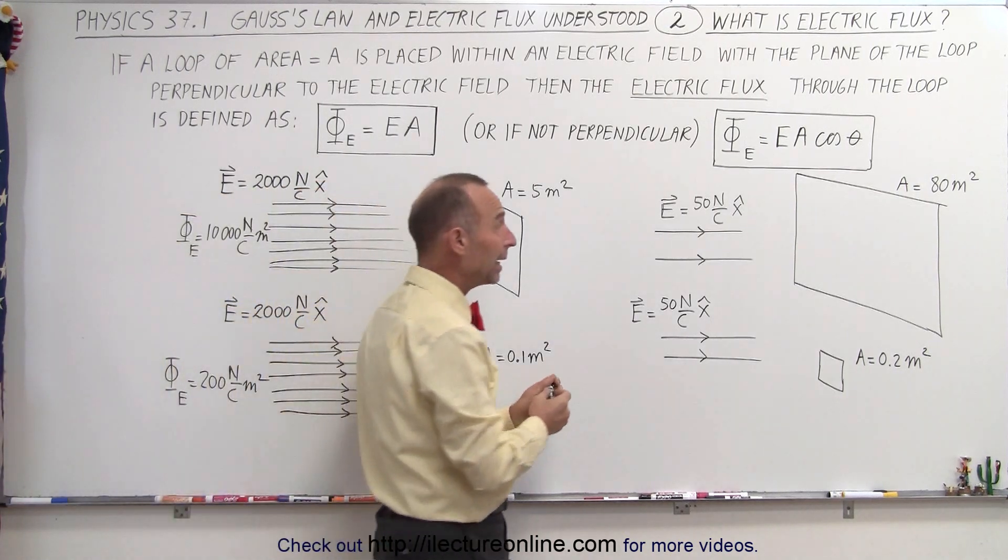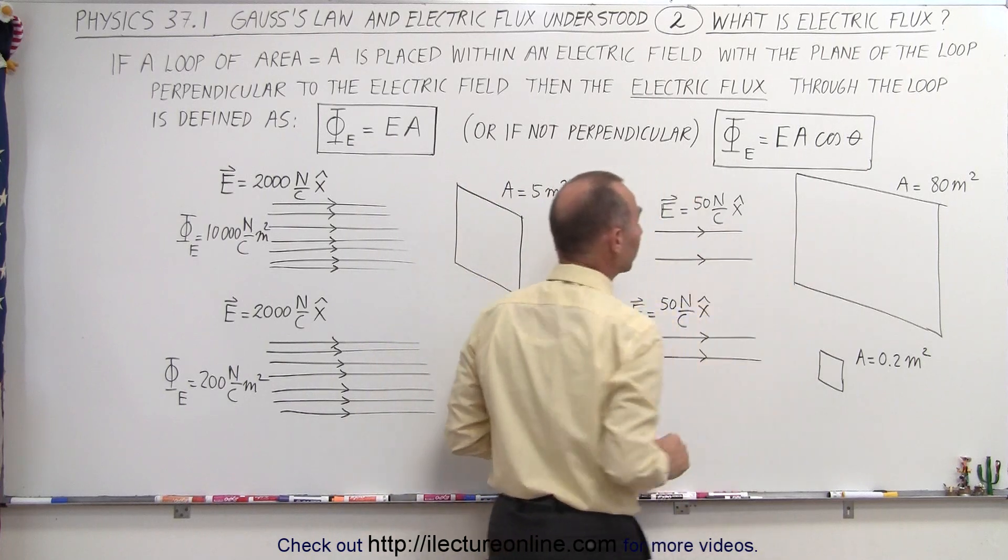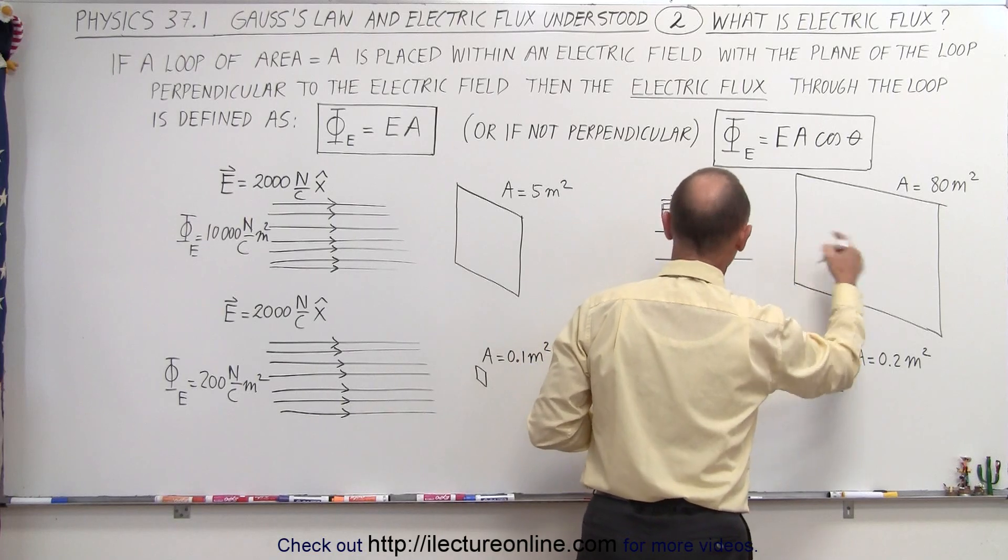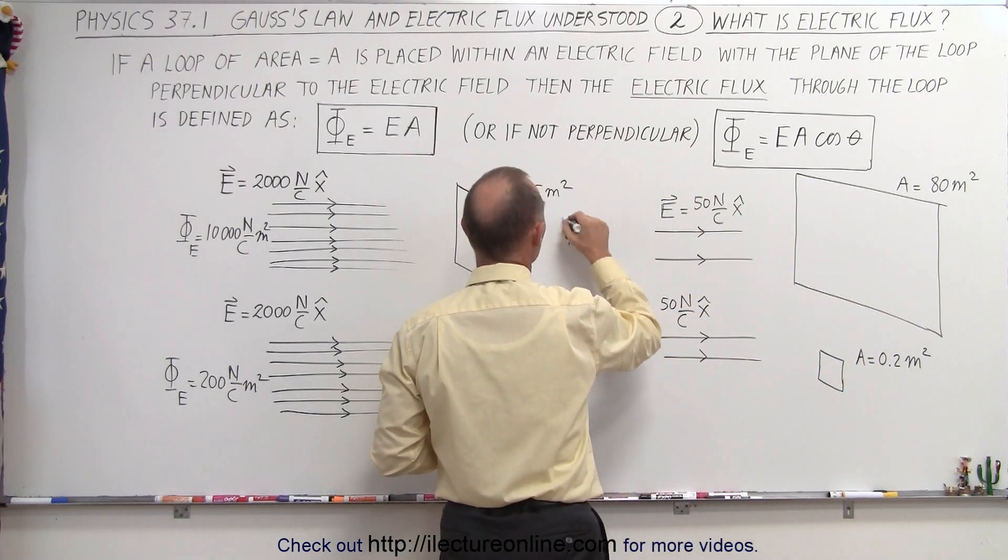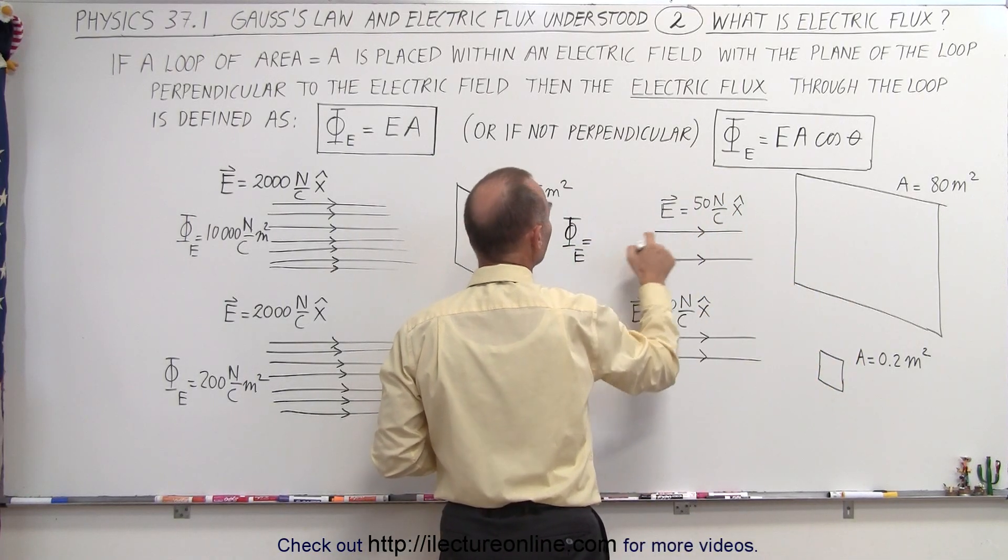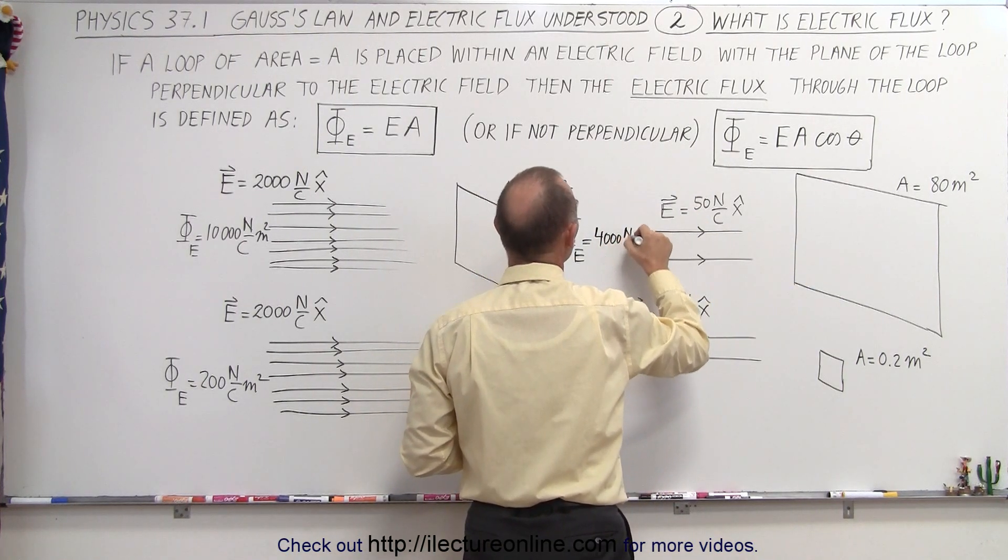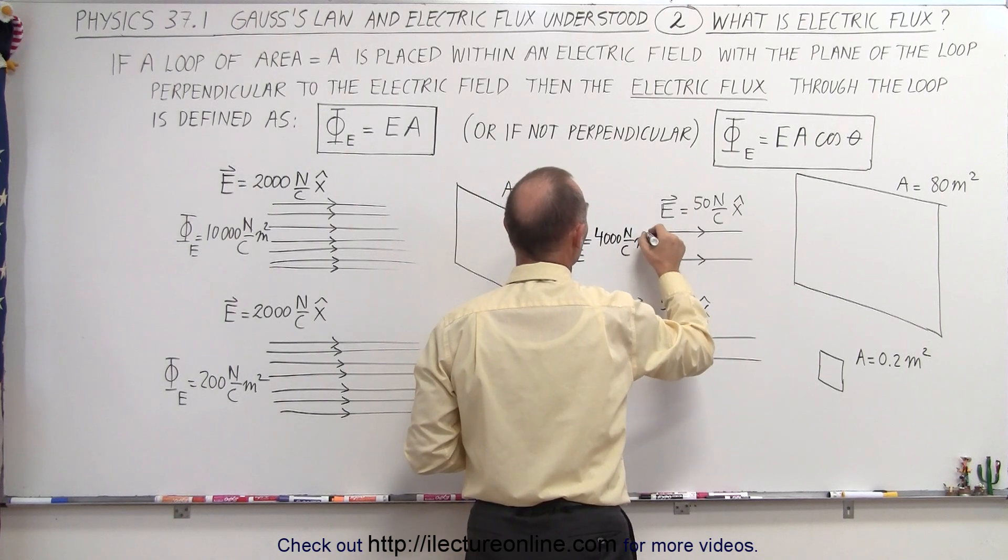Now, if you have a really big area, but a very small electric field, only 50 N per Coulomb, you can see that in this case the flux through the loop is going to be equal to 50 times 80, which is 4,000 N per Coulomb meters squared.